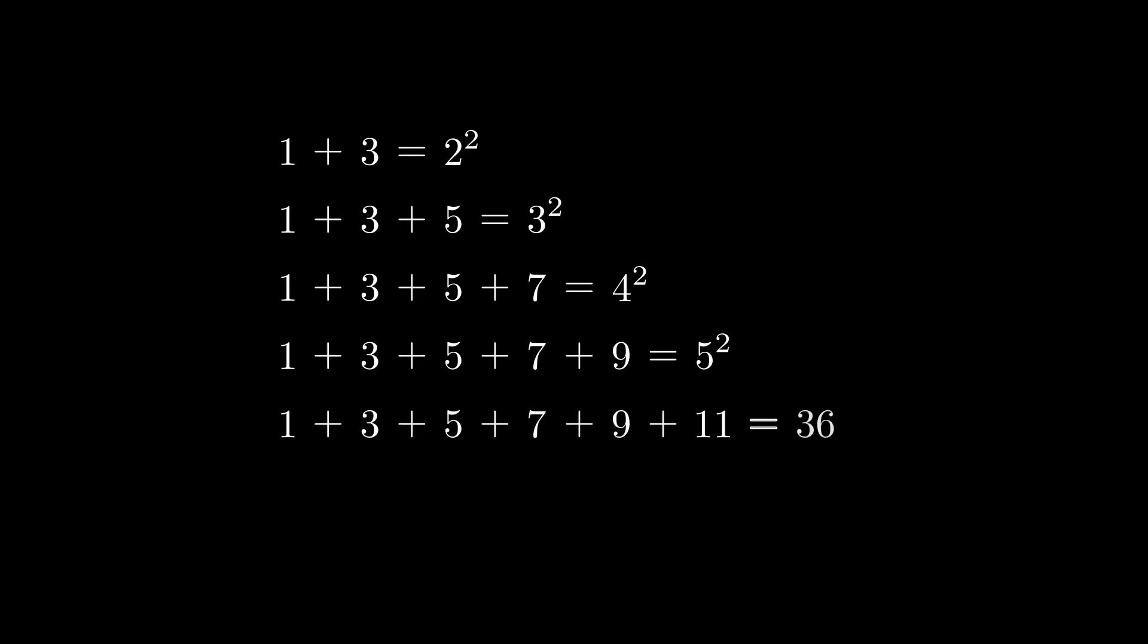And this pattern seems to continue. Looks like the sum of odd numbers starting from 1 is always a perfect square. Why is this happening?